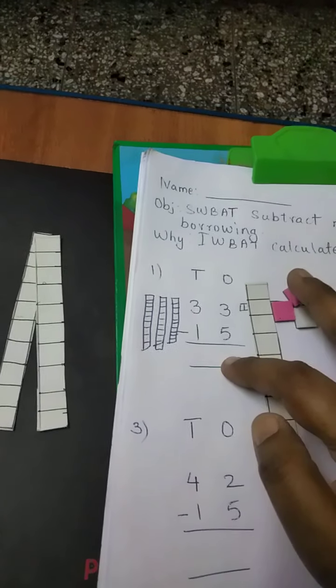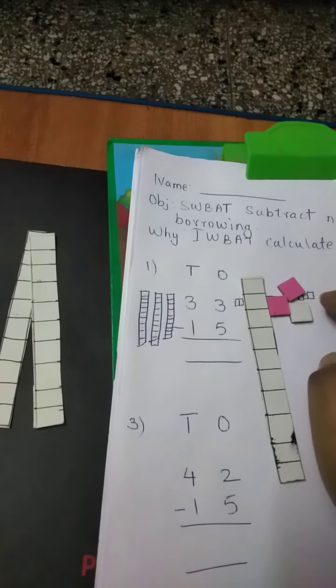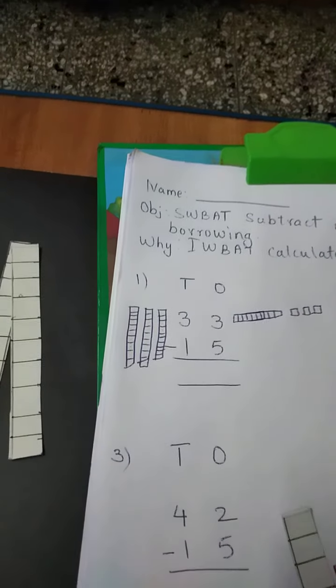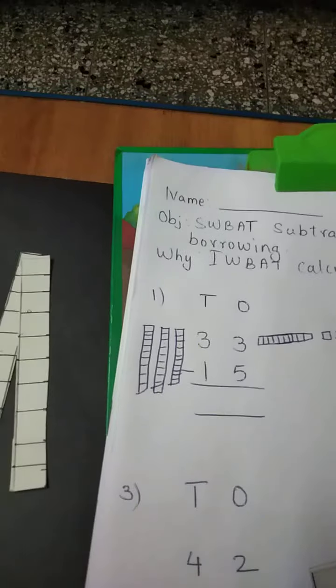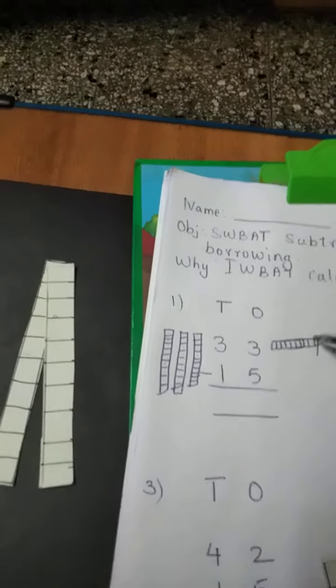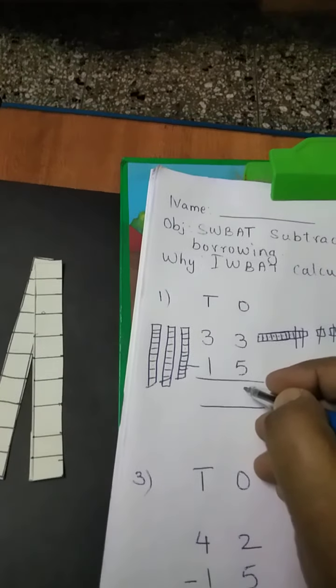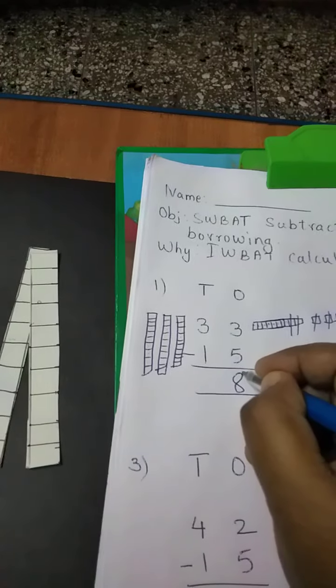So from 13 I have to subtract 5. Okay? So I will subtract 5 from 13. I will draw here also. So I will remove 5 from 13. 1, 2, 3, 4, 5. How many are left? 1, 2, 3, 4, 5, 6, 7, 8. So from 13 I subtracted 5, and 8 remain.